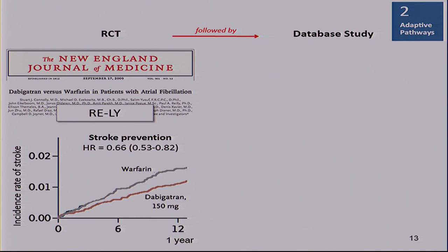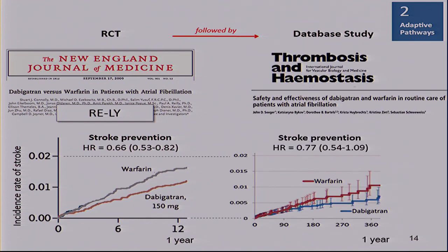The RE-LY trial — the RCT we've talked about already — has multiple database studies that followed it. We found a very similar result with regard to stroke prevention. What is interesting when you look at the Kaplan-Meier curves is that the incidence rates are lower in the real-world data analysis. That goes back to the point that we didn't impose any enrichment strategy while the trial most likely did. But the point estimates are very similar.